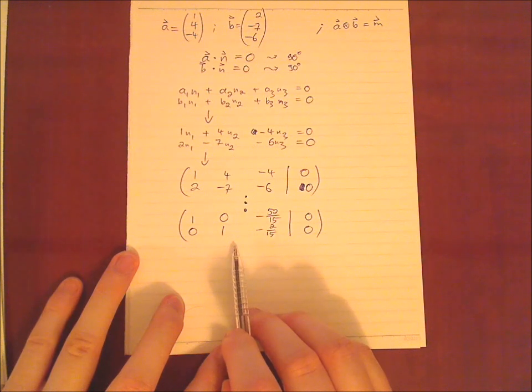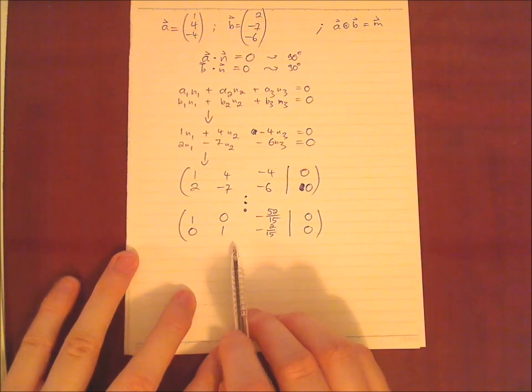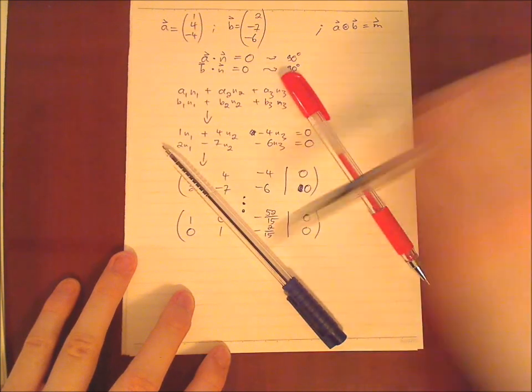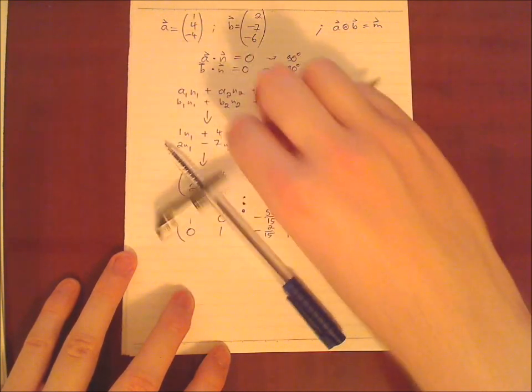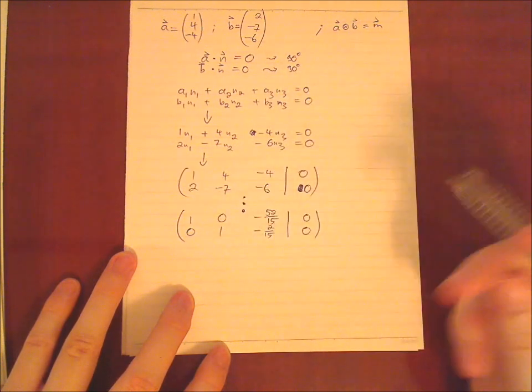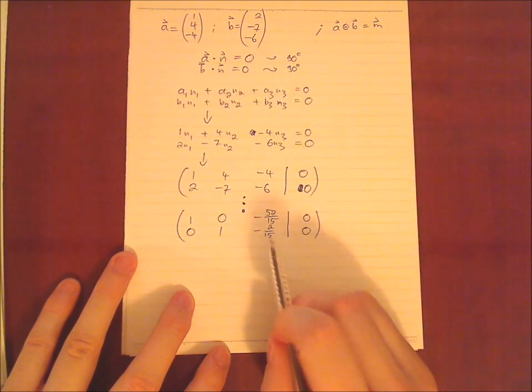Which does also make perfect sense since we have when we have two vectors there are always more possibilities for a normal vector right. So this is why we have one information less than we actually need.